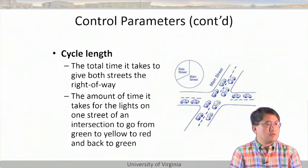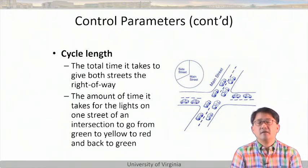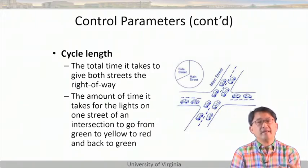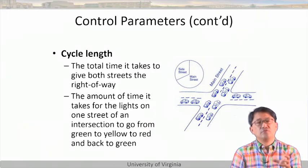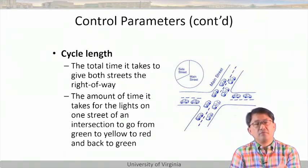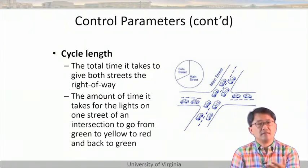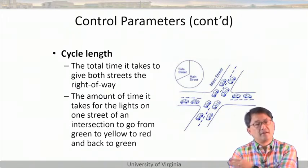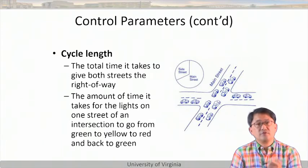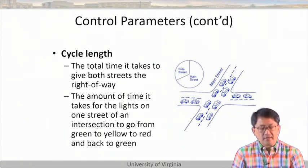Emergency vehicle preemption — when fire trucks and ambulances request green at an intersection. In the US, once you complete the minimum green time you open up green for whoever is requesting preemption. This saves lives and is very beneficial, but it does disrupt progression — that's a challenge that needs to be addressed.